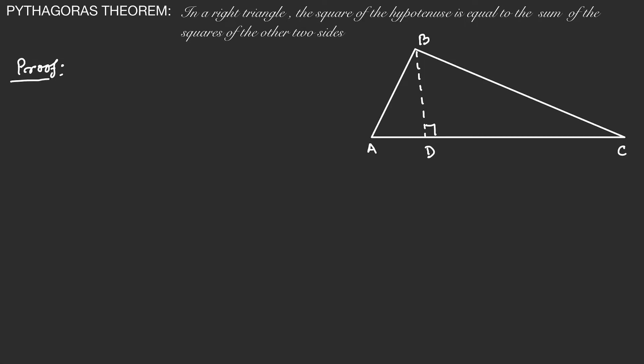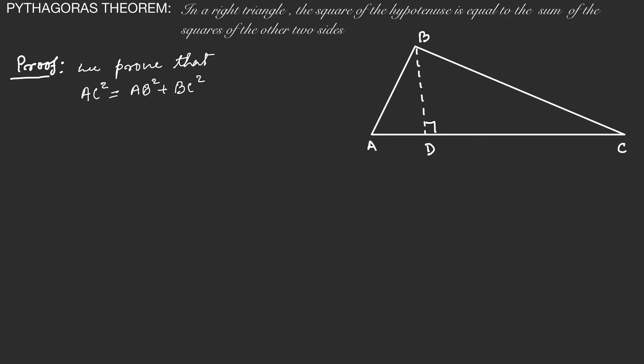Good morning, my dear students. Today we are going to prove Pythagoras' theorem with the help of similarity of two triangles. The statement is: in a right triangle, the square of the hypotenuse is equal to the sum of the squares of the other two sides. So here we need to prove that AC square is equal to AB square plus BC square.